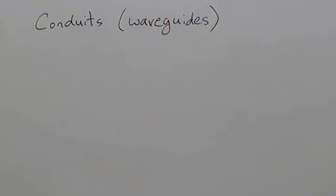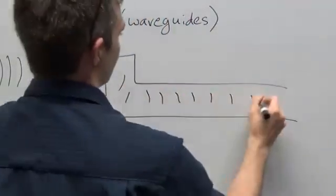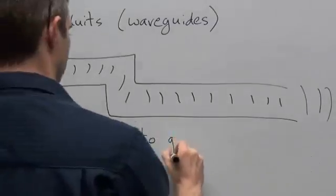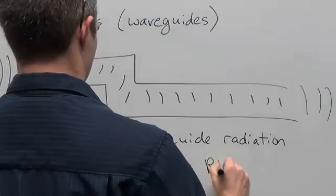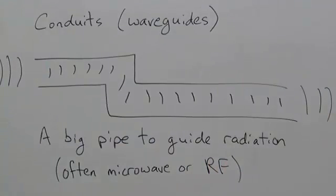But what we're going to talk about in this chapter is waveguides, which are basically pipes for guiding radiation from one place to another. This often involves microwave frequency radiation for the sake of transmitting power, but there are various and sundry other applications.